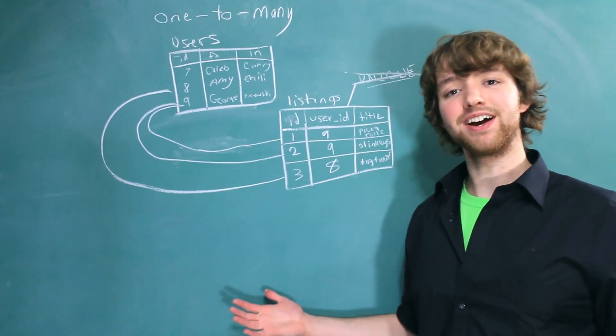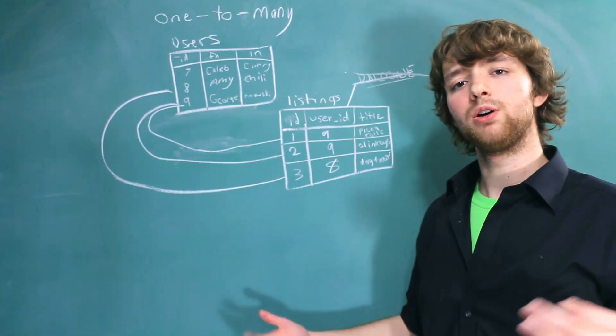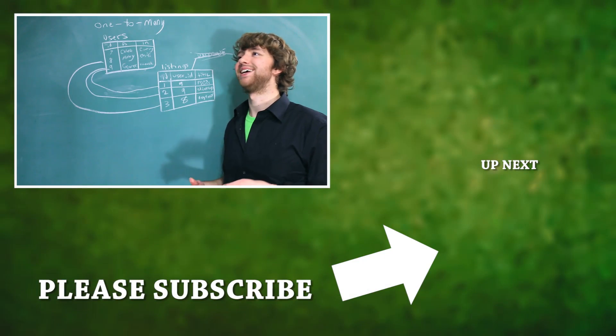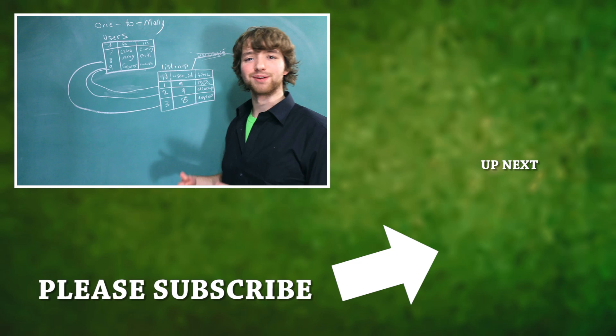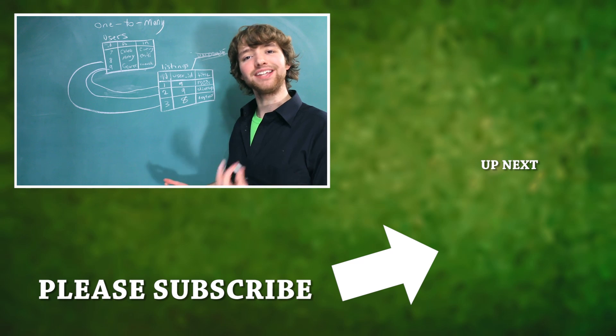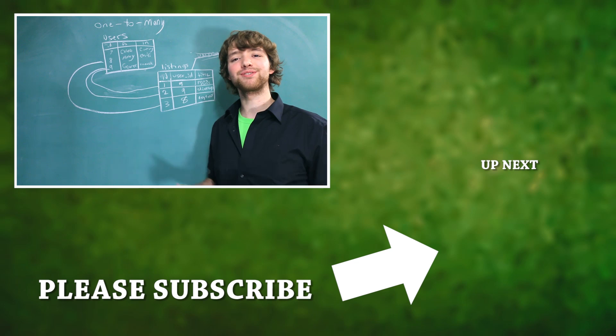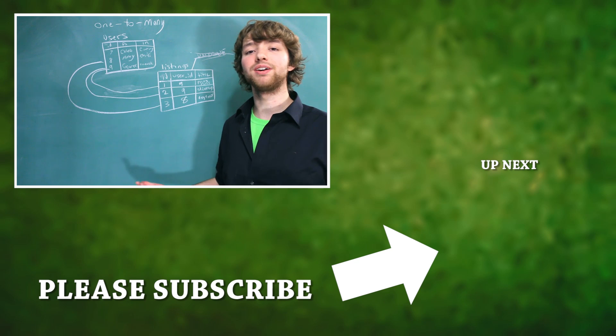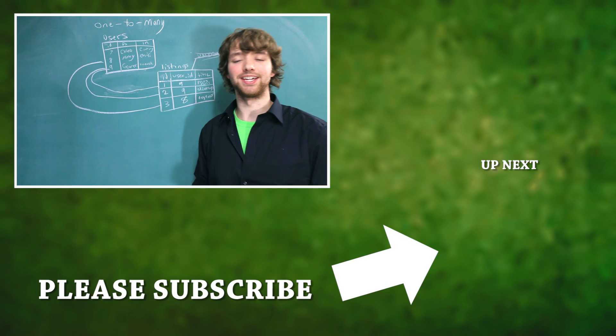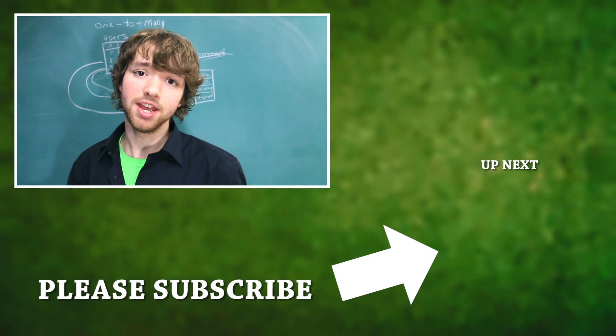So you guys, that's how you design one-to-many relationships. Hopefully that was nice, crispy, and clear... Crispy? Not crispy. I don't know what I was trying to say. Probably like crystal clear maybe? Yeah, hopefully that was nice and crispy for you guys. I will see you in the next video. And as always, if you've enjoyed this, please click subscribe and give this video a like. Thank you so much, and I'll see you in the next one!